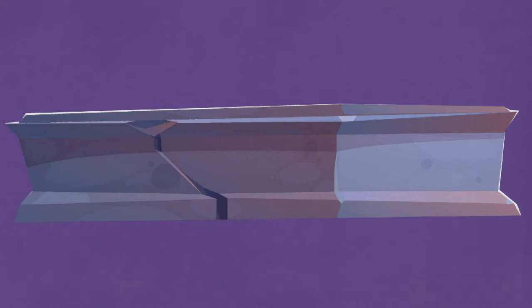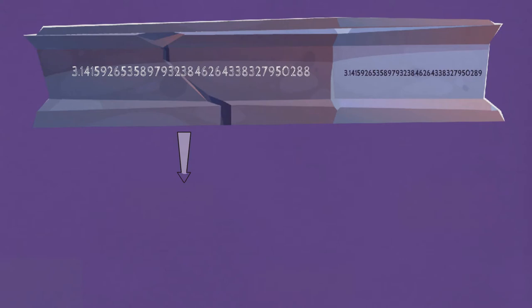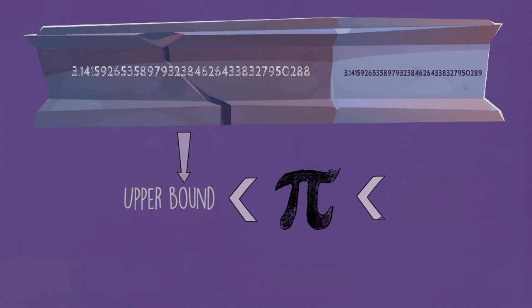That's December 31, 1610, Leiden, Netherlands. A 70-year-old man died. Interestingly, two numbers were engraved on the tombstone by his wife. Those two numbers are the upper and lower bounds of pi, up to 35 decimal places, which was a record then.